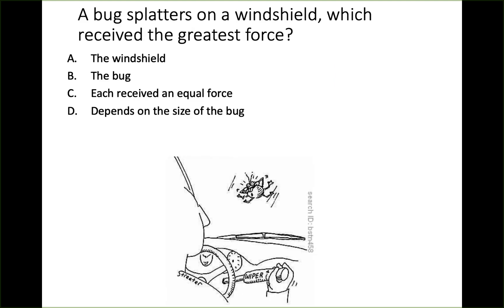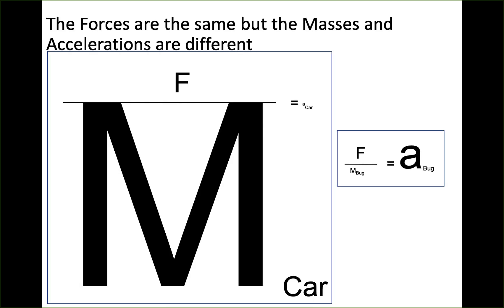Here's a tricky one: a bug splatters on a windshield — which received the greatest force: the windshield, the bug, each received equal force, or does it depend on the size of the bug? They each received an equal force. You might think the car is fine but the bug was obliterated — and again that goes back to the difference in mass. Equal force applied to both, but the car's much greater mass means its acceleration is minuscule compared to the bug's, which was enough to obliterate it.